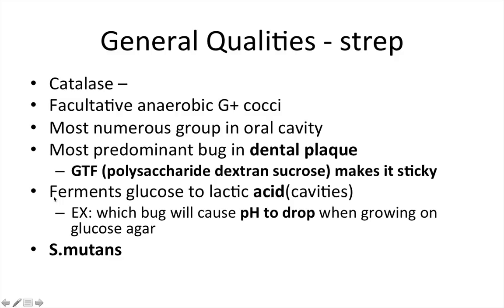Strep is catalase negative, facultative anaerobic, and gram positive cocci. It is the most numerous group in the oral cavity and the most predominant bug in dental plaque. Strep — specifically strep mutans — has an enzyme called GTF, also known as glucosyl transferase, which makes a polysaccharide (a large sugar molecule). It takes sucrose and produces dextrans, and this is what makes plaque sticky.